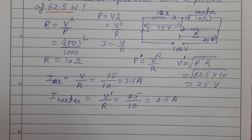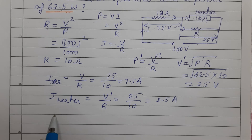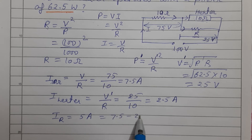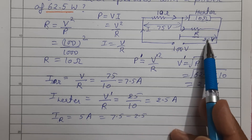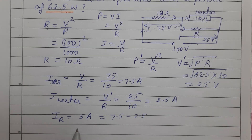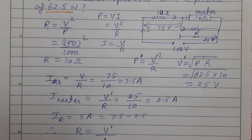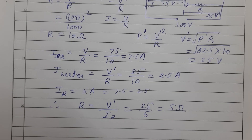The total current from the supply is 7.5 minus 2.5 equals 5 amp — this is the current through resistance R. Therefore R equals V'/I_R equals 25 divided by 5, which equals 5 ohm. This is the final answer.